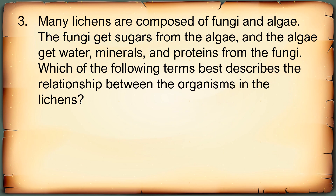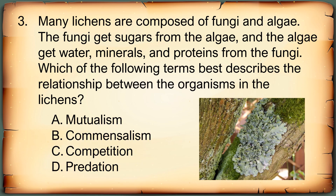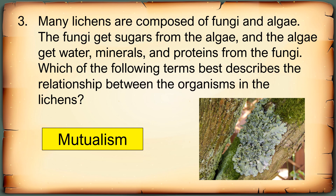Third question: Many lichens are composed of fungi and algae. The fungi gets sugars from the algae and the algae get water, minerals, and proteins from the fungi. Which of the following terms best describes the relationship between the organisms in the lichens? A. Mutualism, B. Commensalism, C. Competition, or D. Predation. Five seconds. Correct answer: Mutualism. As you can see, the fungi and the algae each get a benefit from each other.